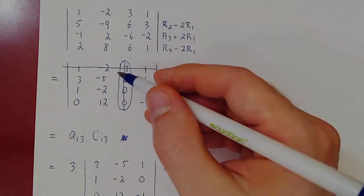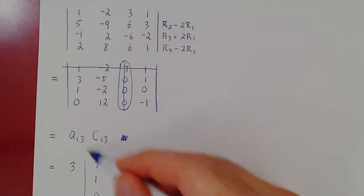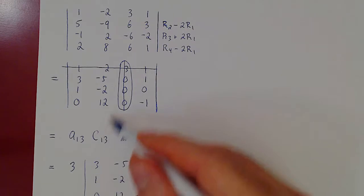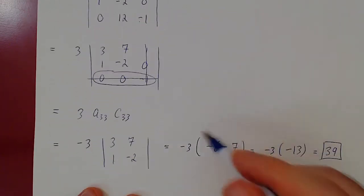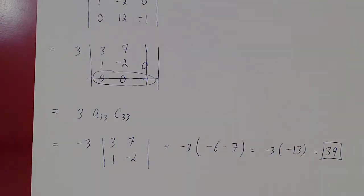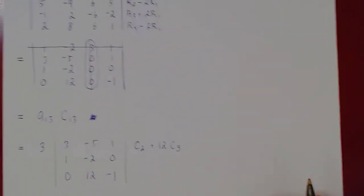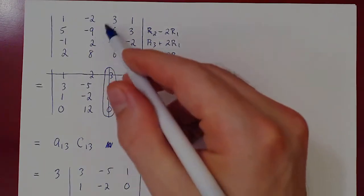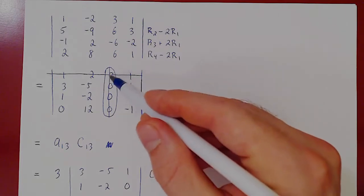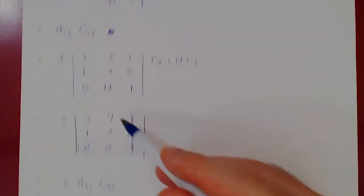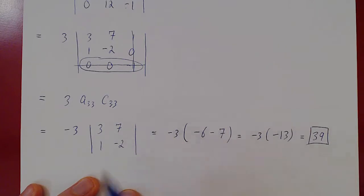Either with row operations or column operations, get a column or row where all the entries are 0 but 1, then use cofactor expansion. Because in every case, you'll only have to compute one cofactor — here it was C1,3, and then C3,3. The pattern is: 4 by 4 matrix, 1 cofactor, 3 by 3 matrix, 1 cofactor, 2 by 2 matrix.